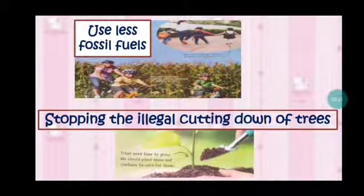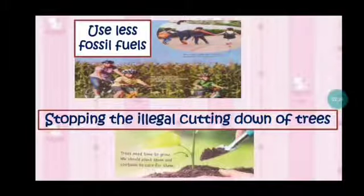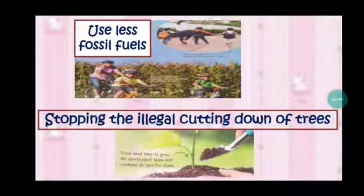And then the last way, the last way to conserve natural resources: stop the illegal cutting down of trees. Stop cutting down of trees, berhenti menebang pohon. It's better for us to do reforestation. Malah kita harus reforestation, menanam lagi. Trees need time to grow. We should plant them and continue to care for them. We know that trees produce fresh air, it will keep the soil. Jadi banyak kegunaan ya.